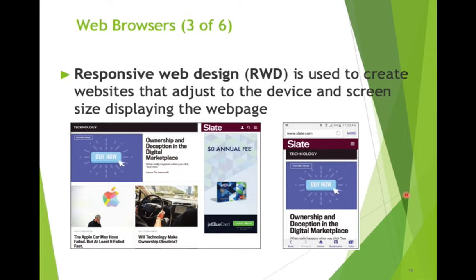Before Ethan Marcotte developed RWD, there was an awkward period where websites were one size, fitting the largest desktop screen. For a while, developers created a separate mobile website and desktop website — very expensive, and the mobile site didn't do everything the main site did. Now, thanks to Ethan Marcotte's development of RWD, the two websites are the same, so you can access all the same interactivity on your phone.